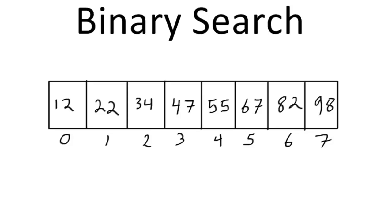The cool thing about binary search in comparison to linear search is we cut our search space in half on every single comparison. With linear search, if we had a 50,000 or 100,000 or even a million element array, we may have to do 50,000, 100,000, or a million comparisons before we find the value we're looking for, because it may be at the very end of the array or may not even be in the array at all.